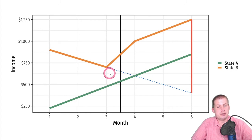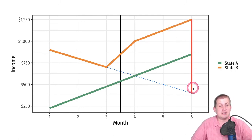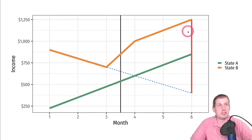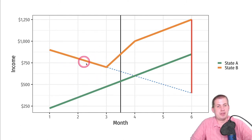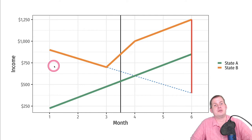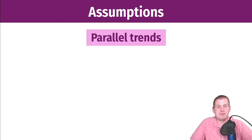Another example: instead of being flat, State B income is decreasing and State A income is increasing, then the policy happens and State B magically reverses and goes up. The measured causal effect would be massive — if you ran a regression, you'd see a large coefficient for the interaction term. But it's wrong because these are not good comparable treatment and control groups. You would need to find a State A that was also declining at the same rate as State B to use as a valid control.